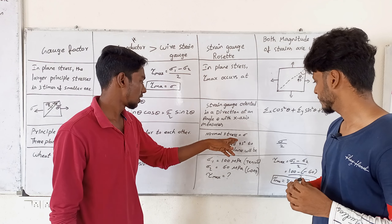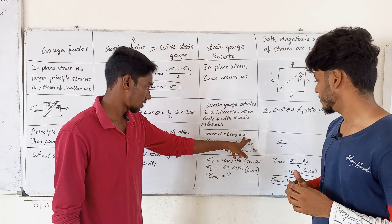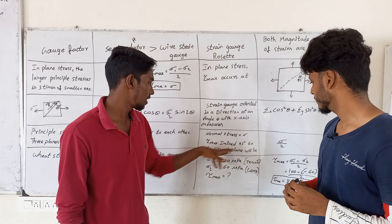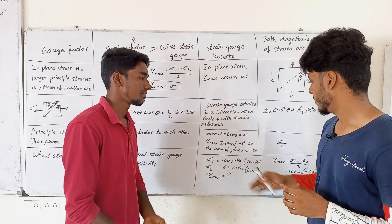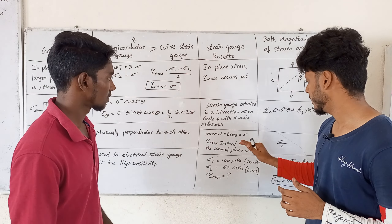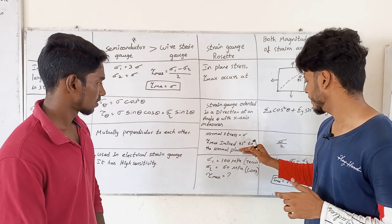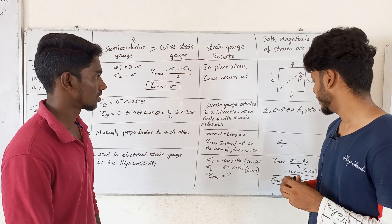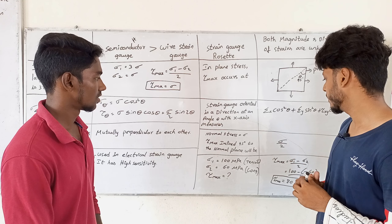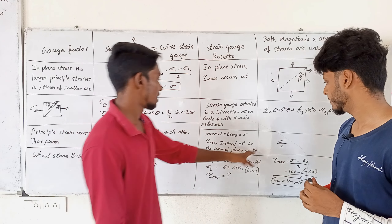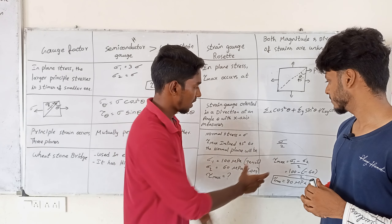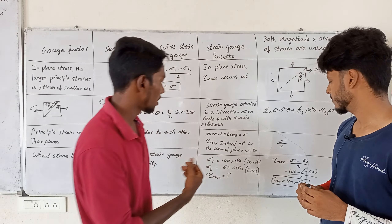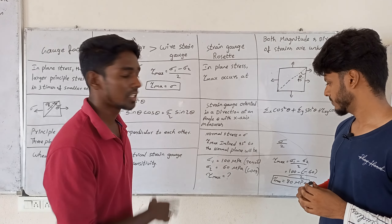Now, normal stress equals sigma. Tau-max inclined at 45 degrees to the normal plane will give a normal stress of sigma. Tau-max inclined at 45 degrees gives sigma by 2. The normal stress on a principal plane has the axis as a principal plane, and the axis gives sigma by 2.